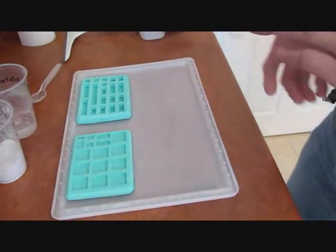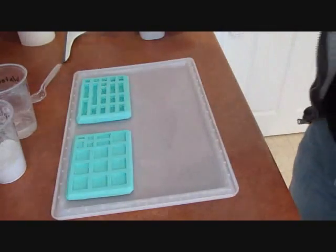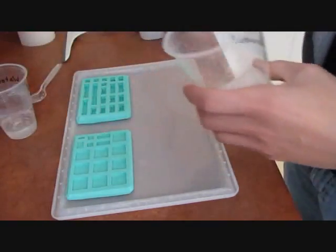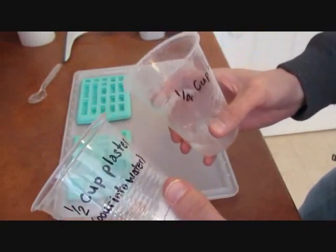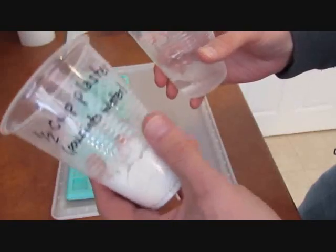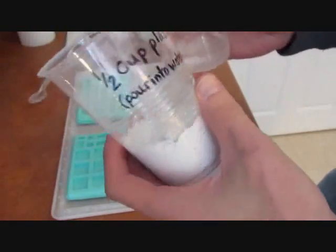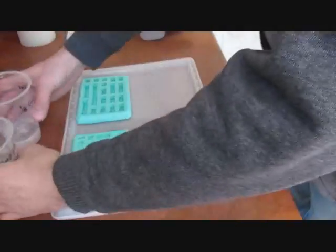The ratio for this plaster is also an advantage. It's not a lot of complicated math. The ratio basically runs a half cup of plaster to a quarter cup of water, and I just use these two plastic cups. I've been using them since I started. Plastic spoon and I'm good to go.